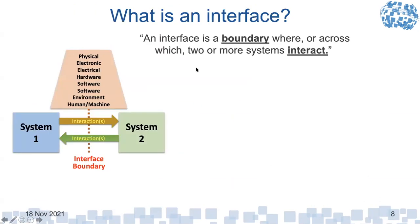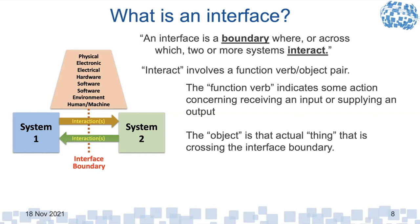So what is an interface? It's a boundary where or across which two or more systems interact. The boundary is not a physical thing, it's a concept. The interaction involves a function verb-object pair — the function verb indicates some action concerning receiving the input or supplying an output, that transfer of information or energy. The object is the actual thing that's crossing the boundary. We can't lose sight of the real physical world. If you replace those arrows with a cable connecting system one and two, where exactly is the boundary? Who owns the cables — system one or system two? That's part of the issue.